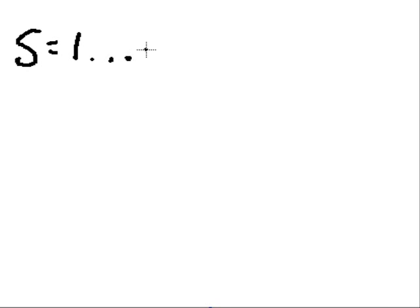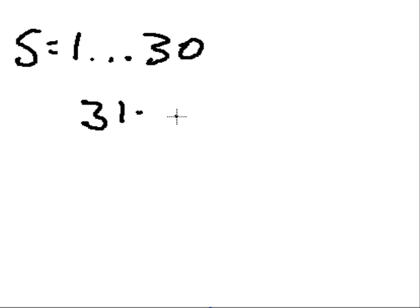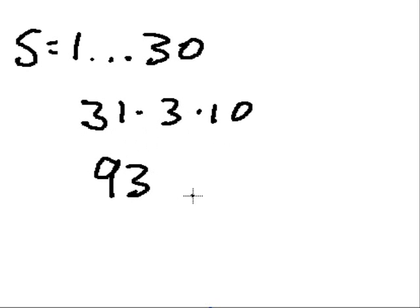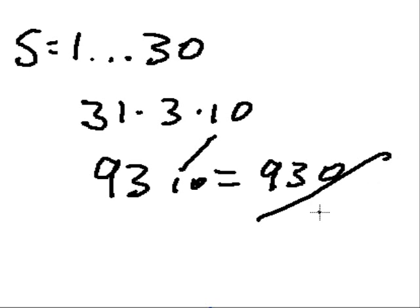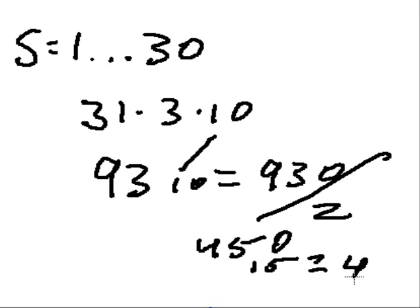Can we do 1 to 30? Add up everything from 1 to 30. 30 plus 1 is 31. How many of these? 30. 31 times 30 is the same as 31 times 3 times 10. 3 times 31 is 93, times 10 equals 930. Divide it in half: half of 900 is 450, half of 30 is 15. So the answer is 465.